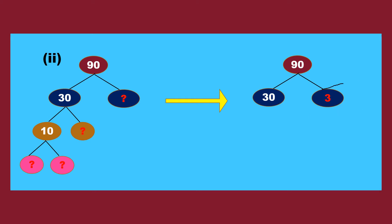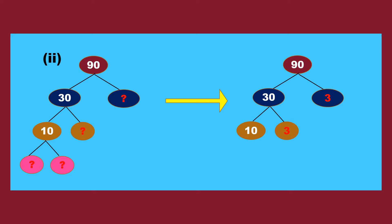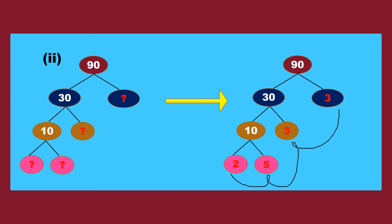Our procedure is we should stop when we reach a prime number. Here 30 is a composite number, so we continue splitting it. 30 we can write as 10 into 3, so that blank is filled with 3. Again here 3 is also a prime number, so these two branches stop. We have 10 remaining, which is composite, so it is split: 10 means 2 into 5. Now 2, 5, 3, and 3 are all prime numbers, so this is the final step. Therefore 90 = 2 × 5 × 3 × 3.